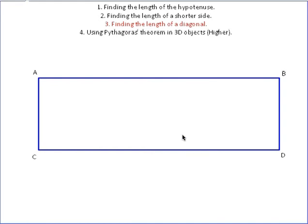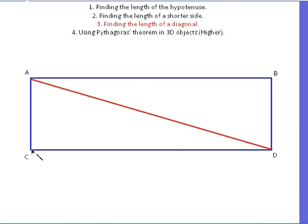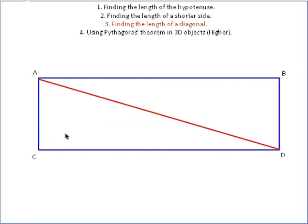Another classic exam question is when you get given a rectangle and the exam says to find the length of the diagonal. Often people don't use Pythagoras with these questions because there's no obvious right-angled triangle and they haven't been told to use Pythagoras. All you need to do is draw on your diagonal — from one corner to the other. Both red lines are diagonals of the rectangle, so let's work with this one. Hopefully you can now see there is a right-angled triangle right here.